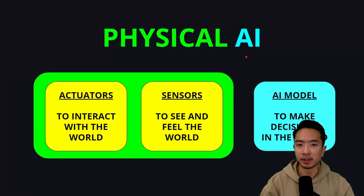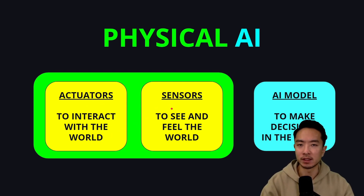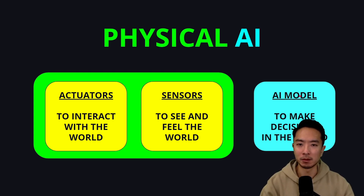Let's define what Physical AI is. The physical part represents something that has actuators and sensors. The actuators allow it to interact with the world, and the sensors allow it to see and feel the world. Examples of the physical part could be robots or autonomous vehicles. The AI part refers to the AI model — the part that helps the system, like a robot or self-driving car, make decisions in the world. Together, this is what we call a Physical AI.